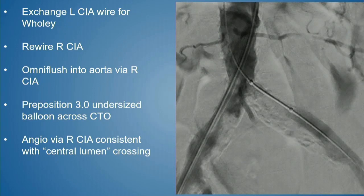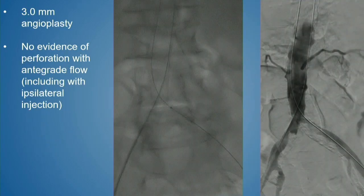Once we had that wire in place, we took pictures from the other side — rewiring the right and placing an Omni-Flush into the aorta from the right. We were able to prove our wire wasn't entering the perforation or anywhere near it — we were going true-to-true, including right at the beak at the cuff of the left common iliac. We did a little undersized balloon angioplasty and took a picture from the right side. After that, we could see flow — and we actually didn't see the extravasation anymore, whether it tamponaded or healed itself — with flow coming in line exactly where we wanted.